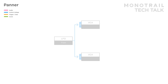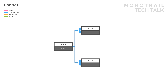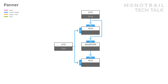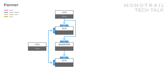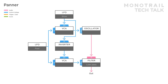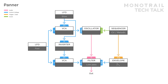You can also use a panner to divide a control voltage over multiple destinations. Here, a fast LFO is used as the input for the two VCAs. A slow LFO is modulating the VCAs, continuously sweeping the fast LFO from one destination to the other. In this setup, one output of the panner is modulating the shape of an oscillator and the other the frequency of the filter. The simple voice is sequenced and the filter is modulated with an envelope as well.